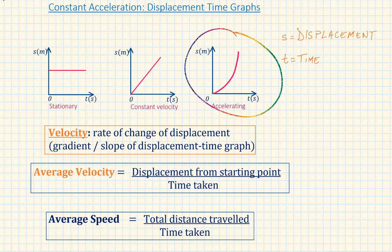In the third scenario, the curved line represents an increasing velocity. That means that the object is accelerating.